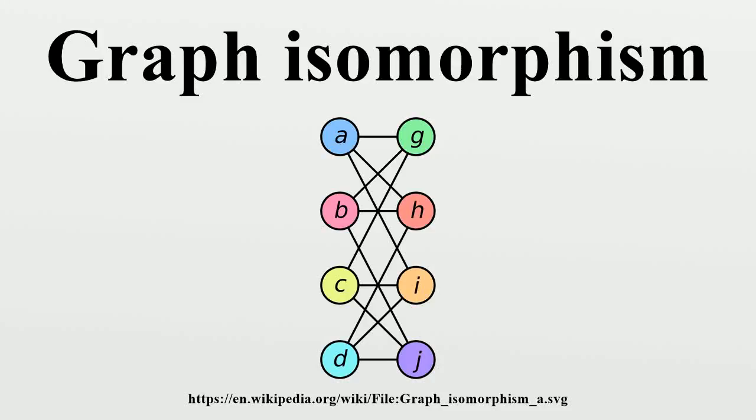In graph theory, an isomorphism of graphs G and H is a bijection between the vertex sets of G and H such that any two vertices u and v of G are adjacent in G if and only if f(u) and f(v) are adjacent in H.